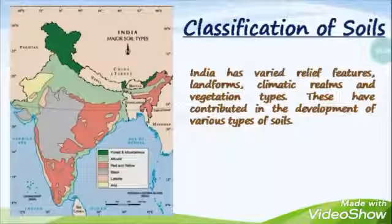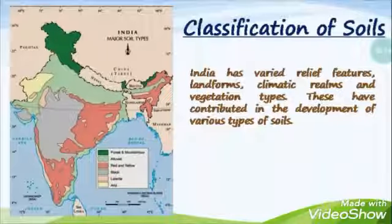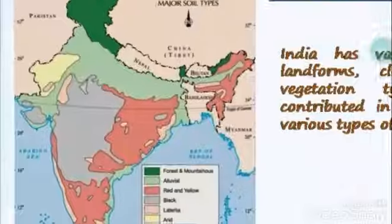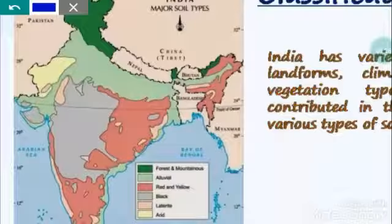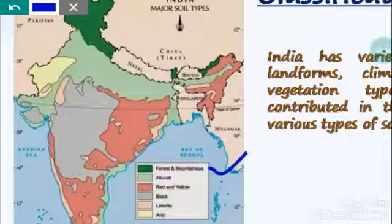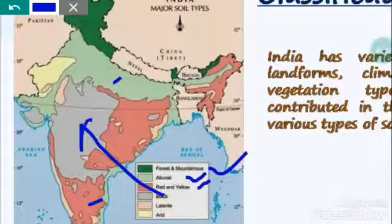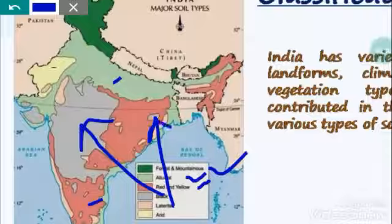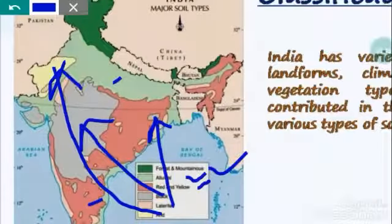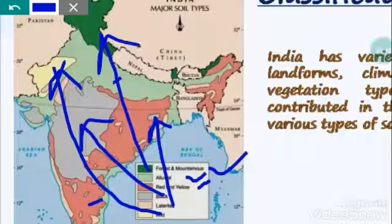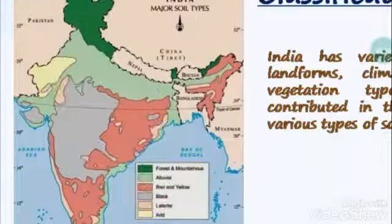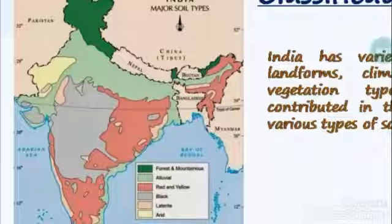In India, we know there are different kinds of landforms and the climates also differ from one another. India has varied relief features, landforms, climatic realms, and vegetation. On the basis of that, in India we can mainly see six kinds of soil: number one forest or mountainous soil, number two alluvial soil, number three red soil, next black soil, next laterite soil, and finally arid soil. In the next videos we will discuss about these different types of soil in India.